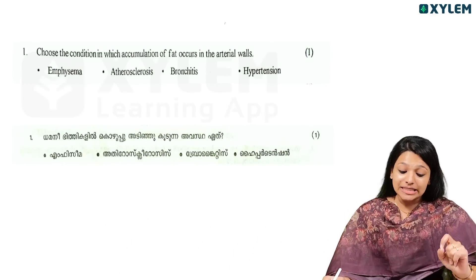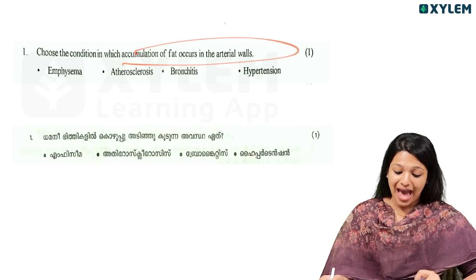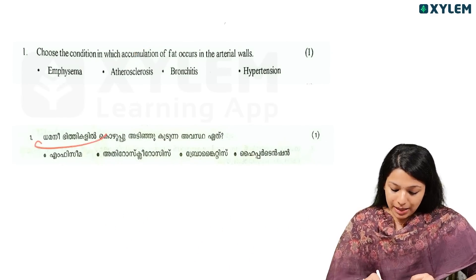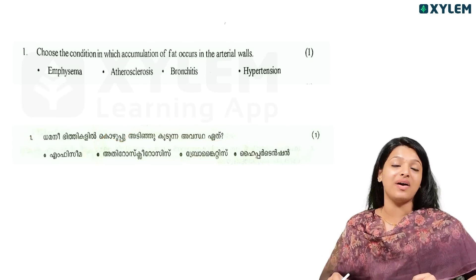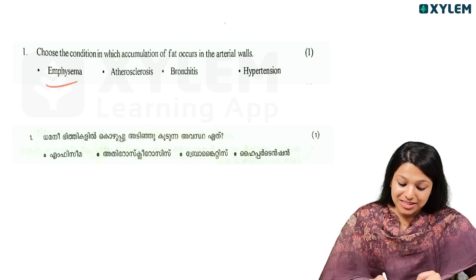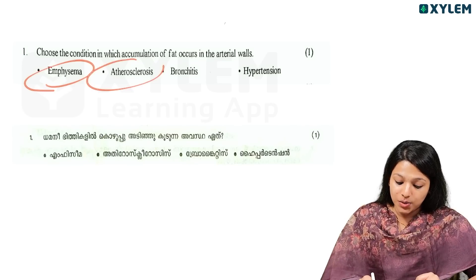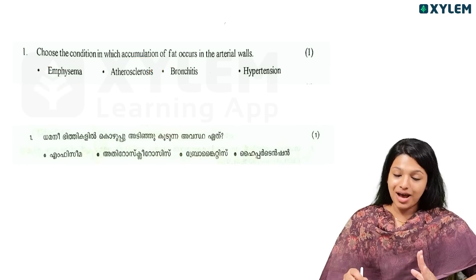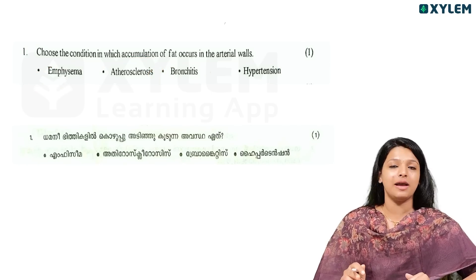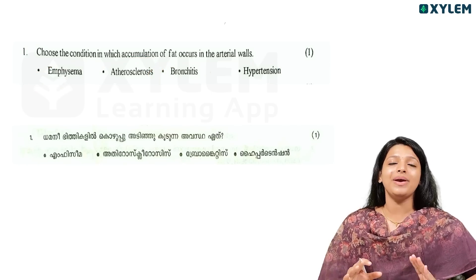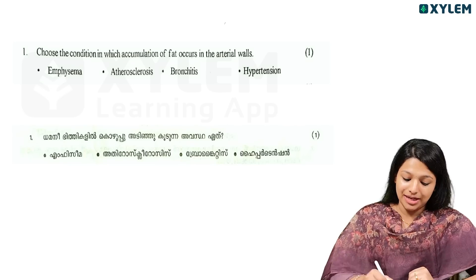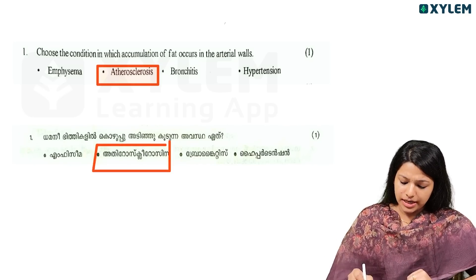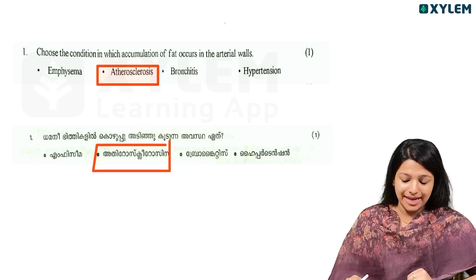Choose the condition in which accumulation of fat occurs in the arterial walls. The options are: Emphysema, Atherosclerosis, Bronchitis, Hypertension. The correct answer is Atherosclerosis.